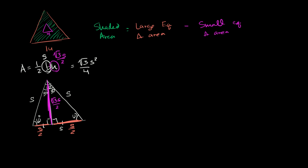So this is going to be equal to the area of the larger triangle. It's going to be square root of 3 over 4 times 14 squared. And the area of the smaller triangle is going to be square root of 3 over 4 times 4 squared.